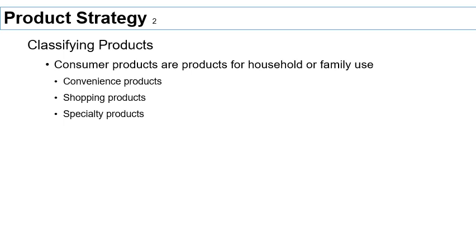Convenience products are products where the amount of information search done by the consumer is minimal — barely any information search is done, and the amount of time spent in decision-making is almost automatic. These are products you buy usually by habit. Great examples are anything you see next to the checkout at a large store — candy, cigarette lighters, USB cables.